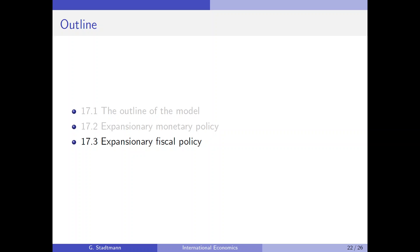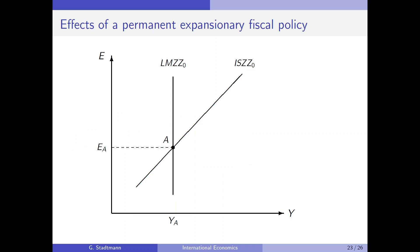Let's talk about the effects of an expansionary fiscal policy in this setting. The equilibrium is given in point A, with an upward sloping ISZZ curve and a vertical line for the LMZZ curve. We want to find out whether an increase in government spending is able to affect the GDP level. This would be nice because right now the economy is in a very severe recession with a 25% unemployment rate.